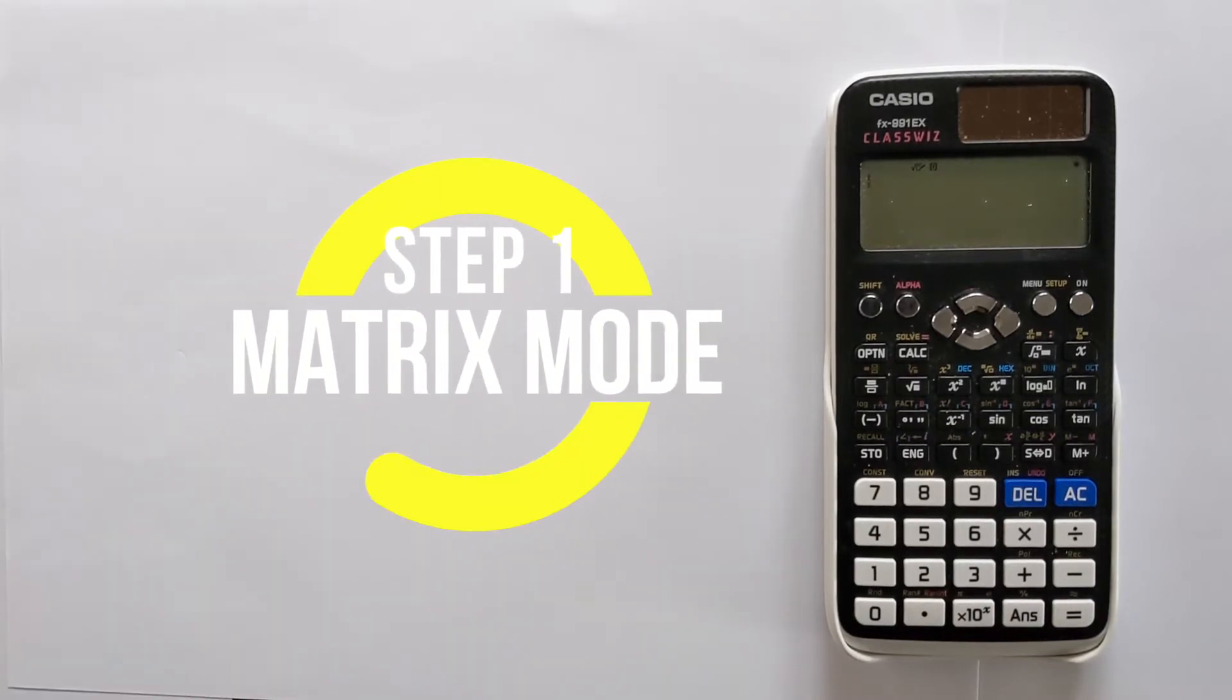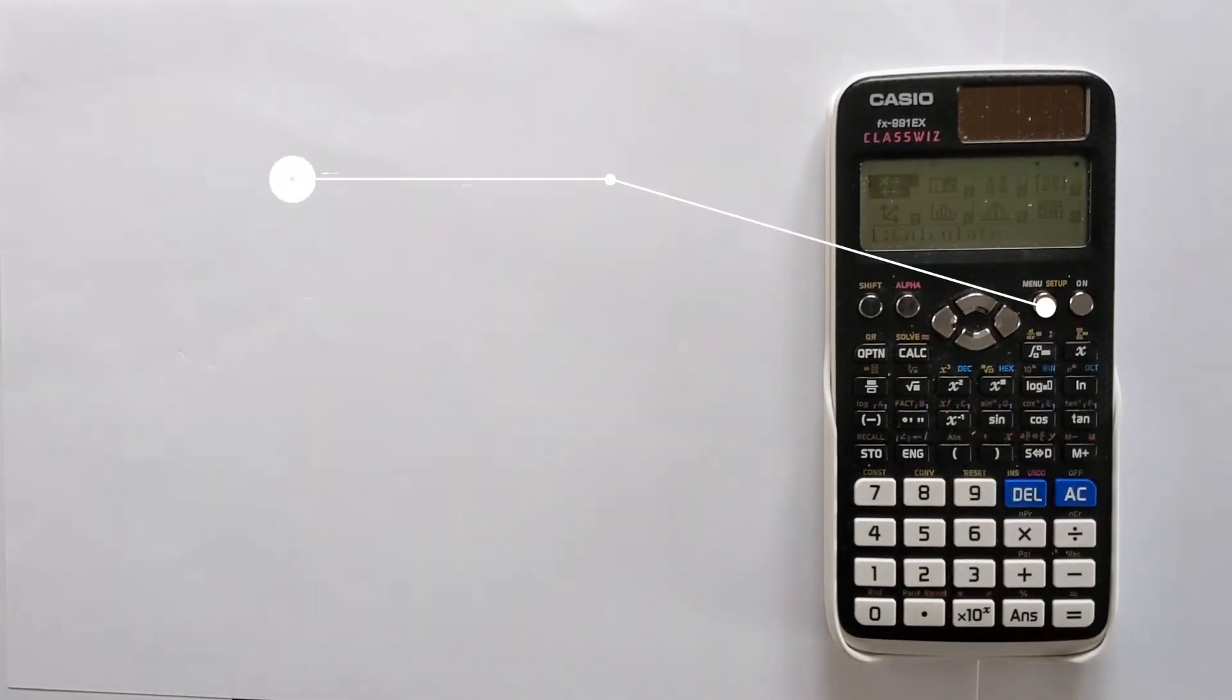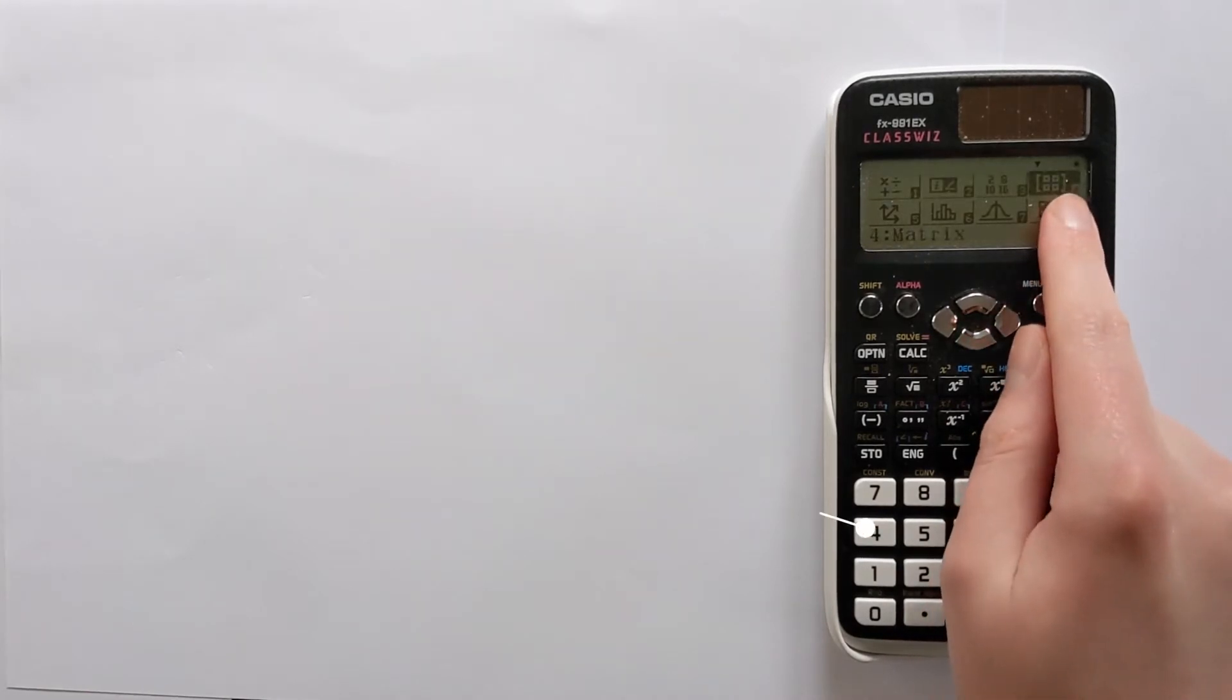So we're going to start by putting this calculator into the correct mode. To do that we need to press menu and we want to find the one that looks a bit like a matrix. So that's here on option four.